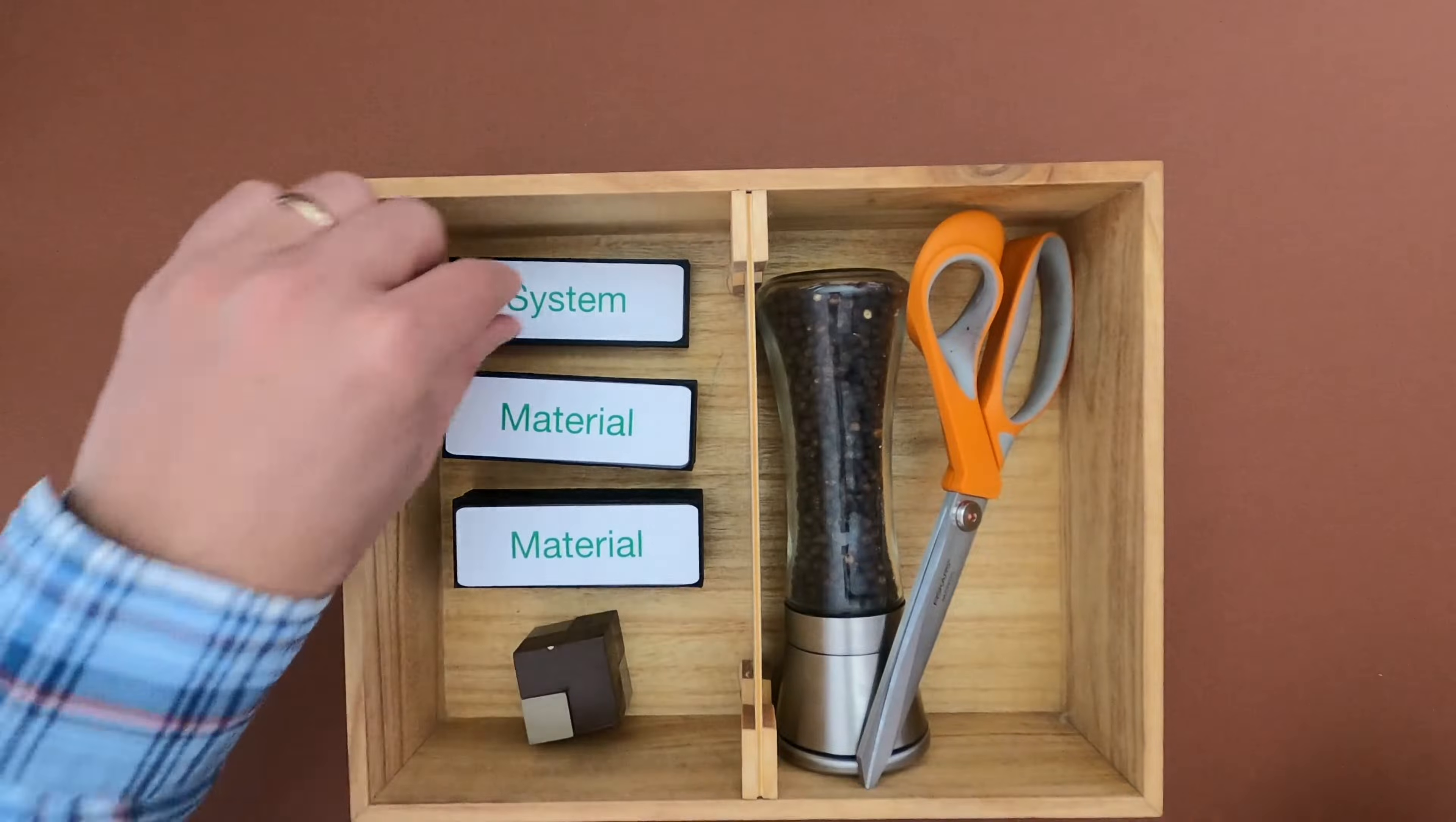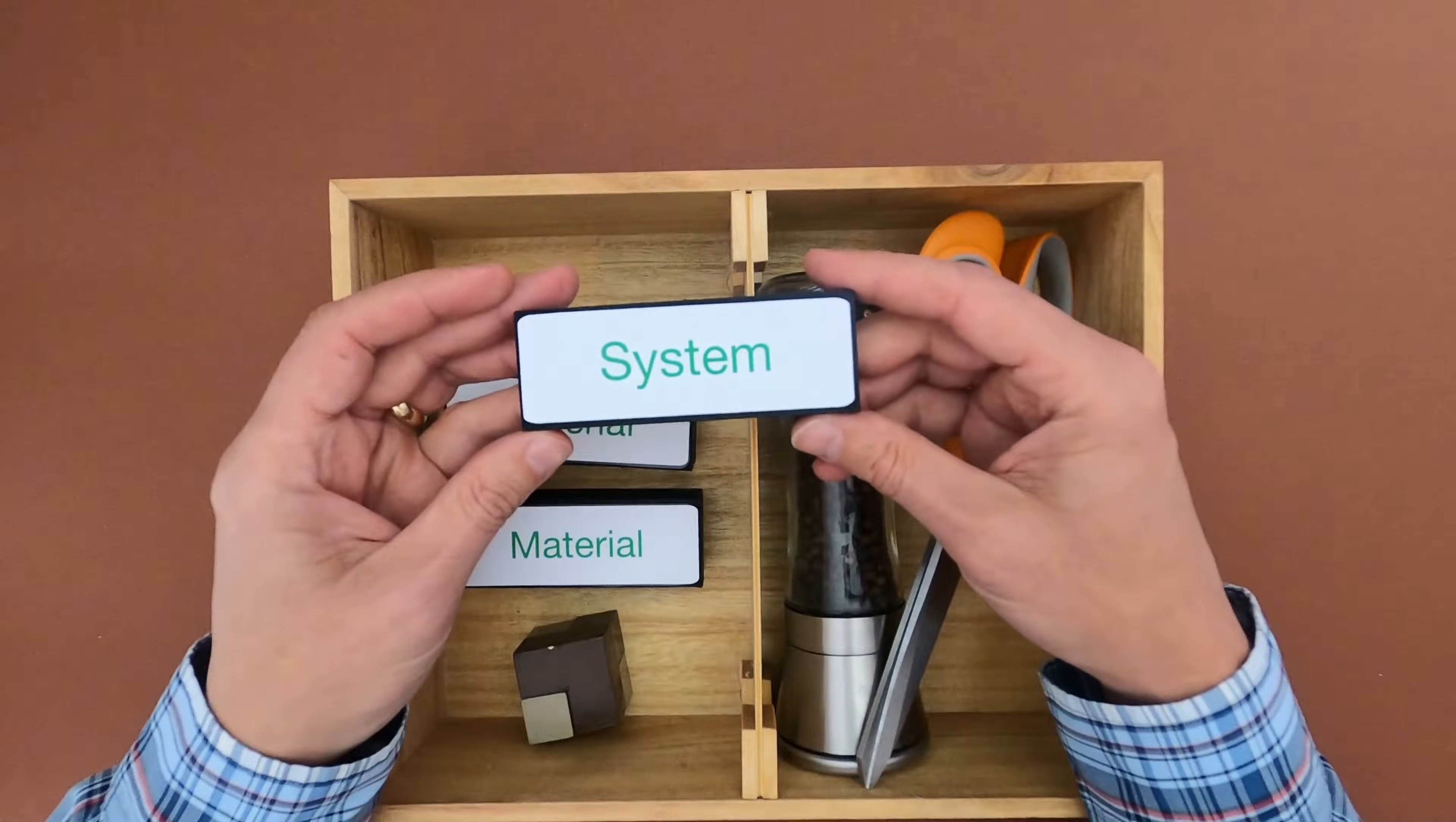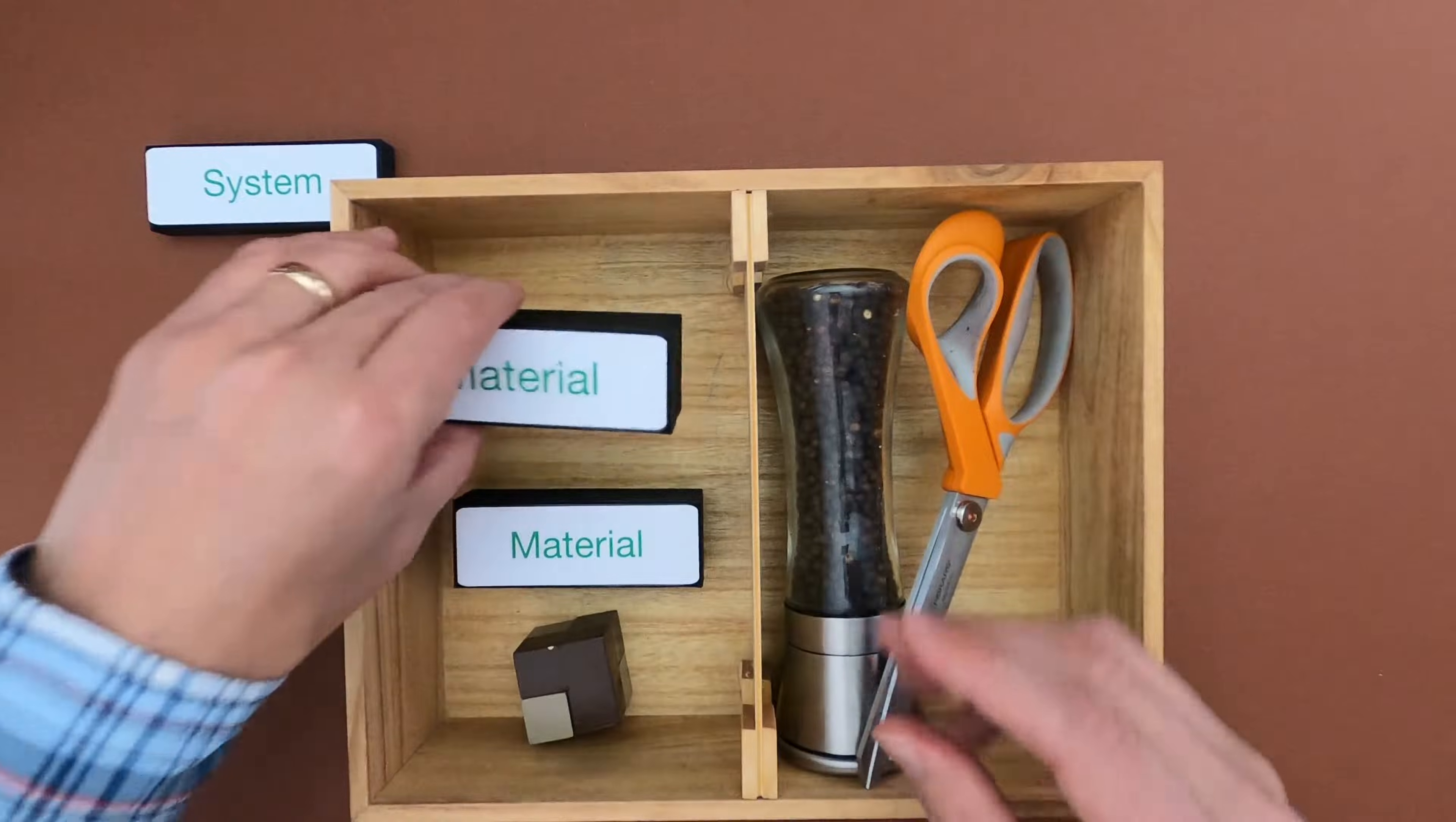As always, the first thing you want to do before you get to material properties is to identify the system. What system are you going to be investigating? But you can see the whole box is filled with material. There are actually two types of material.